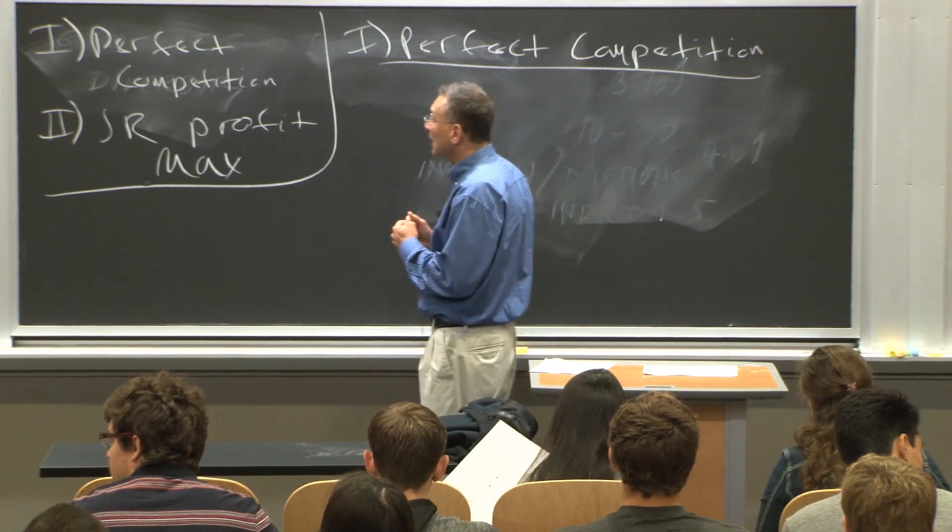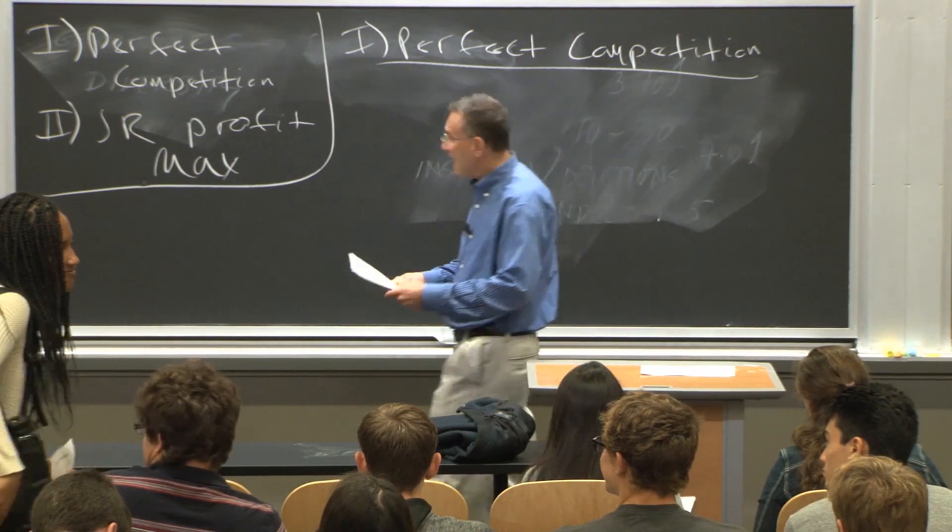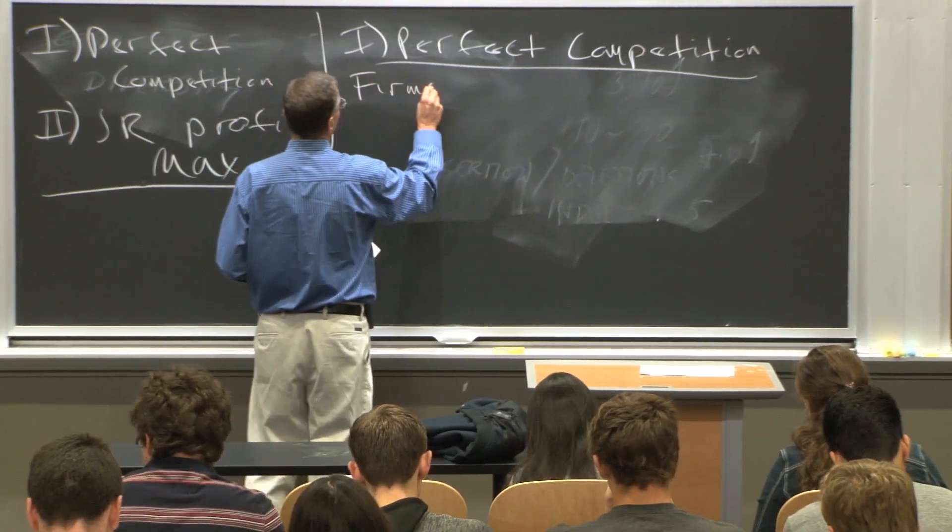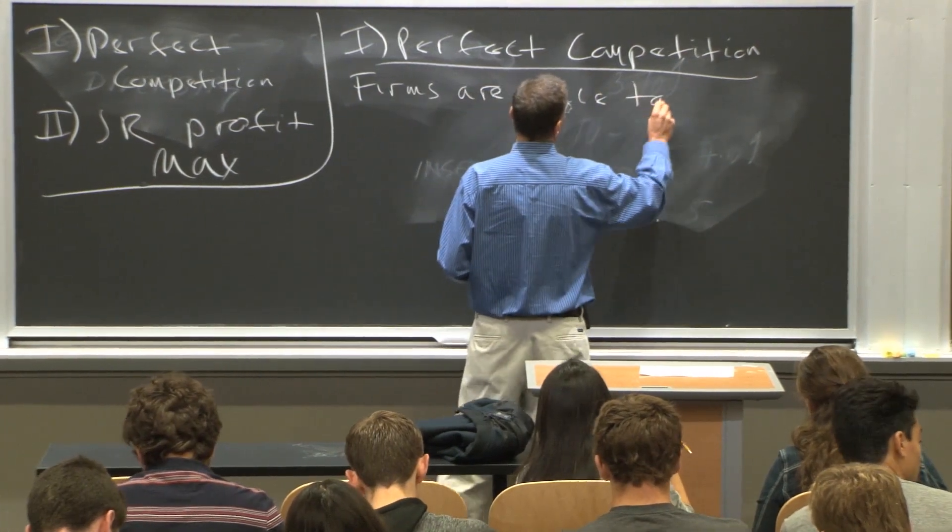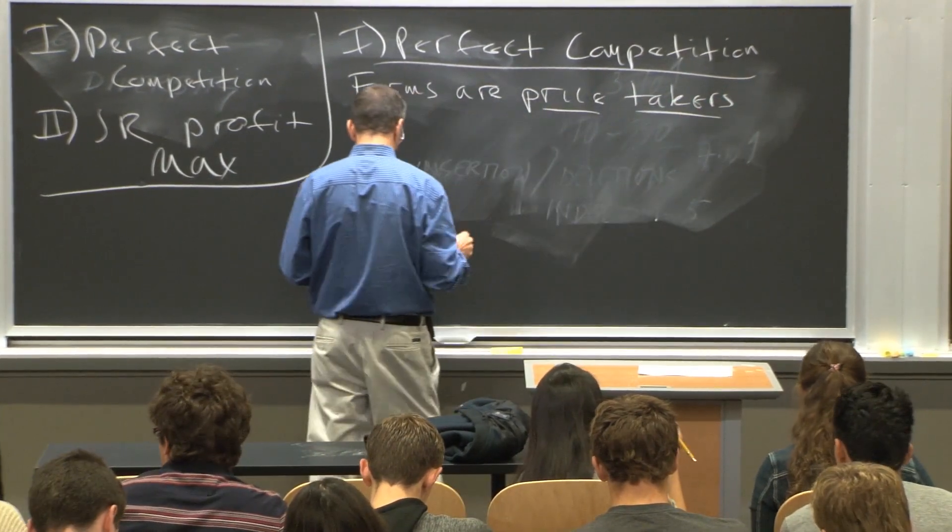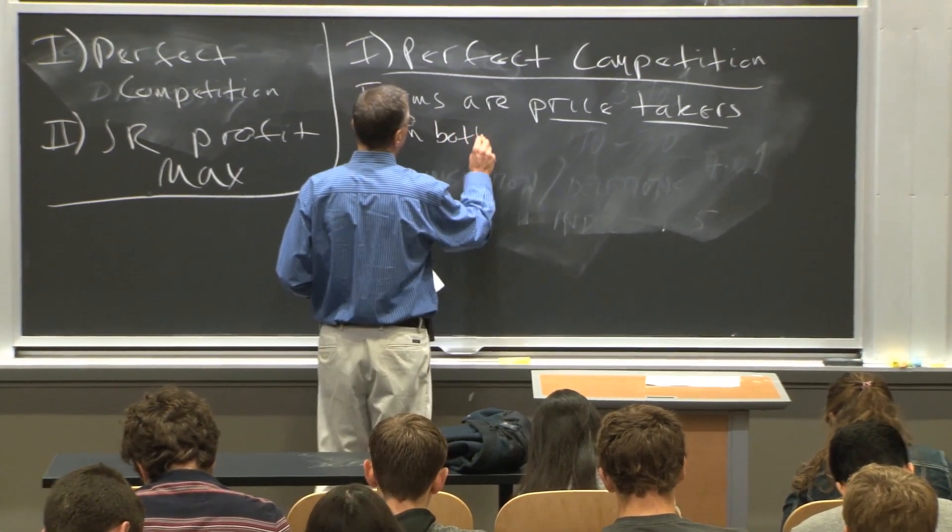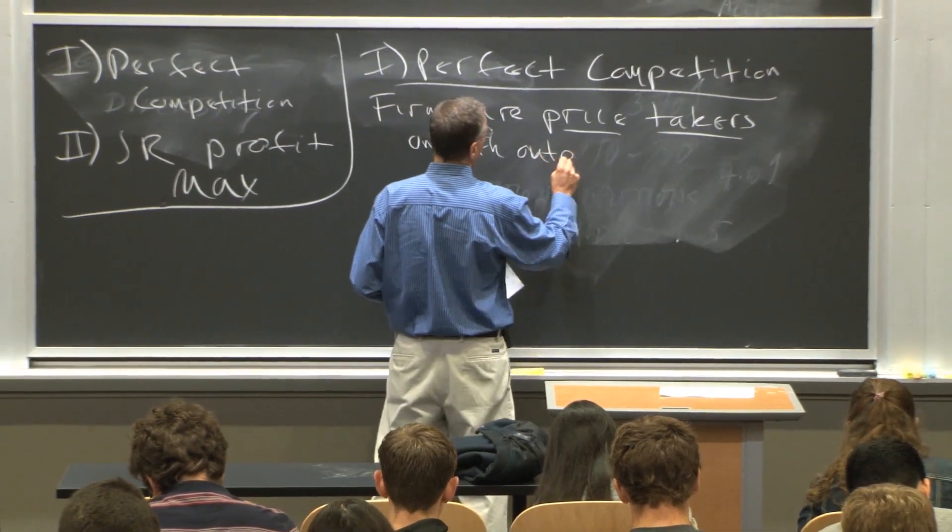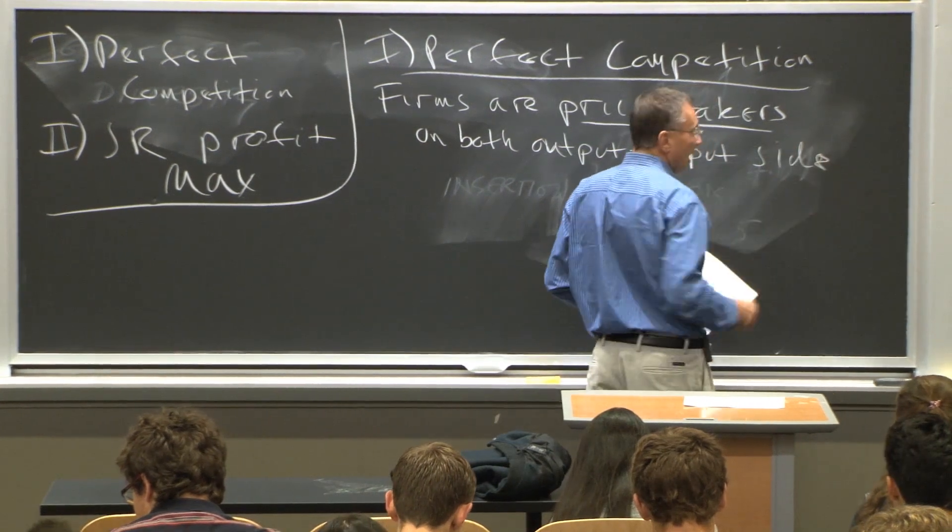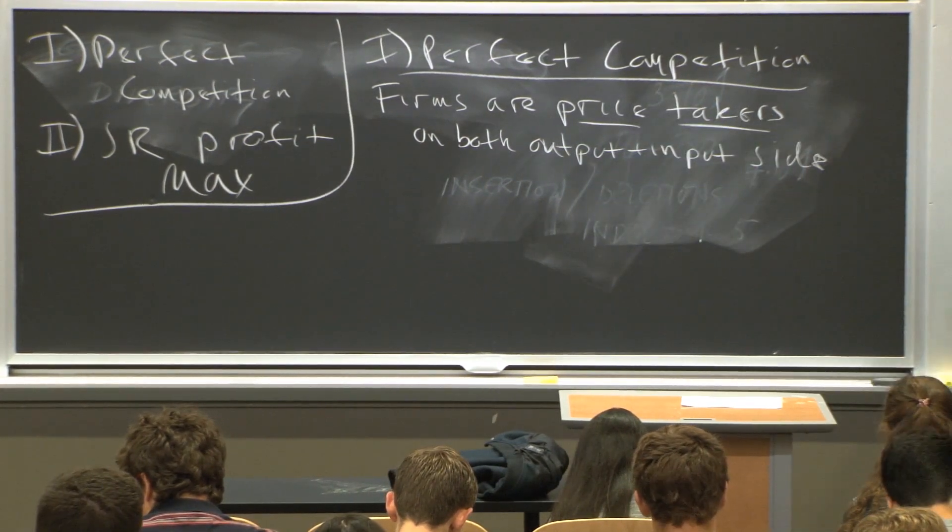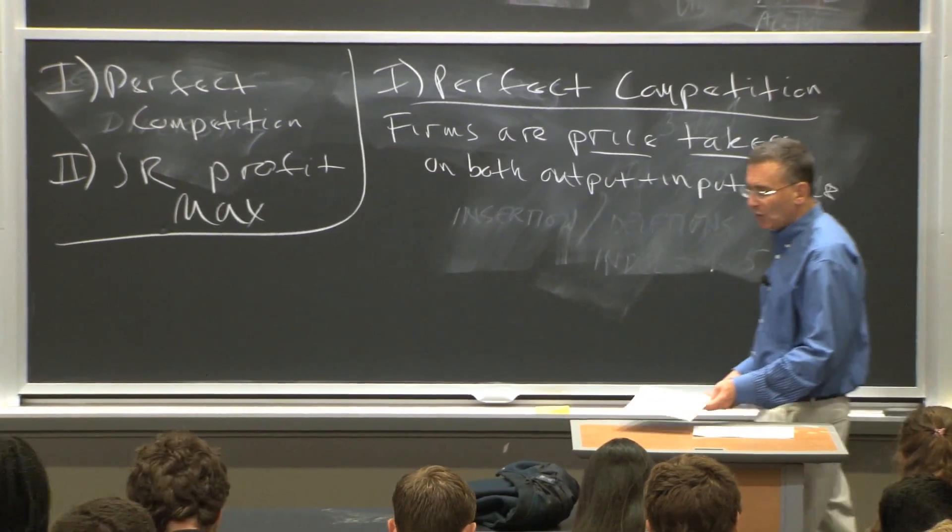Now, tactically, what do I mean by perfect competition? Tactically, a perfectly competitive market is one where firms are price takers. Firms are price takers on both the output and input side.